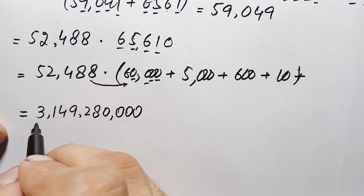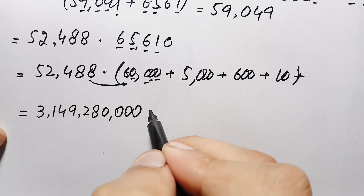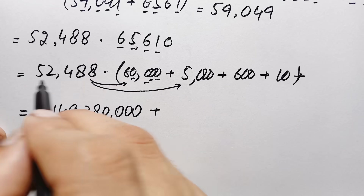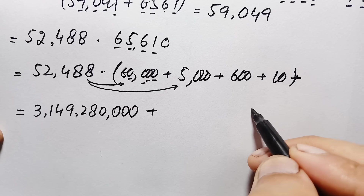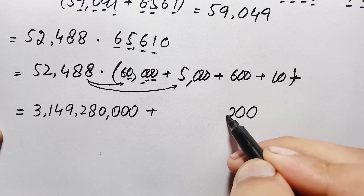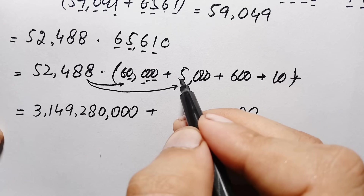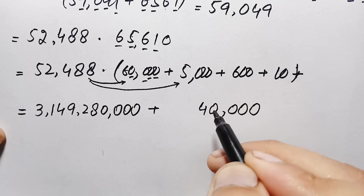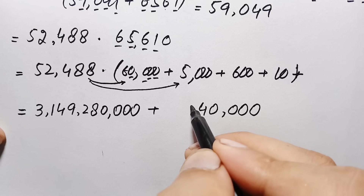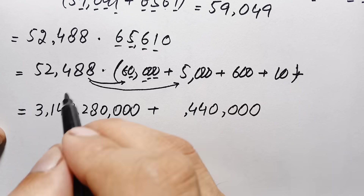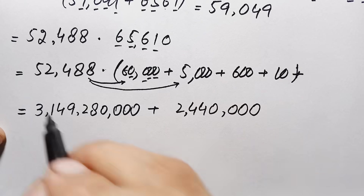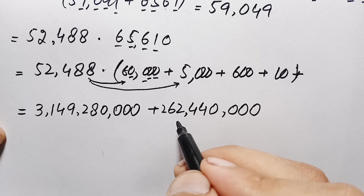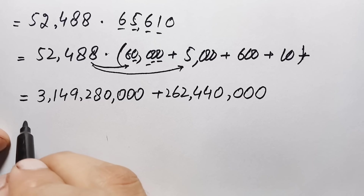Next, multiply 52,488 by 5,000. Multiplying by 5: 5 times 8 is 40, write 0 carry 4; 5 times 8 is 40 plus 4 is 44, write 4 carry 4; 5 times 4 is 20 plus 4 is 24, write 4 carry 2; 5 times 2 is 10 plus 2 is 12 carry 1; 5 times 5 is 25 plus 1 is 26. Appending three zeros gives 262,440,000.